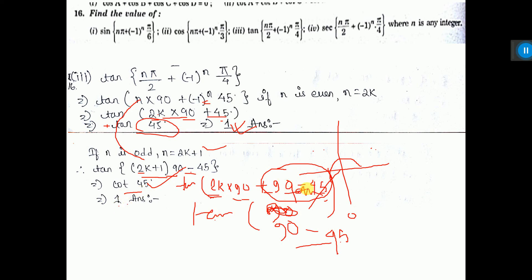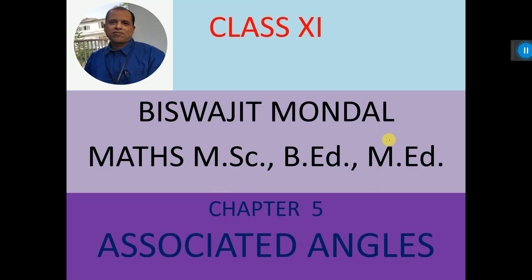Here tan 90 minus 45 is tan 45, that is also value 1. You can do any one. That's all.